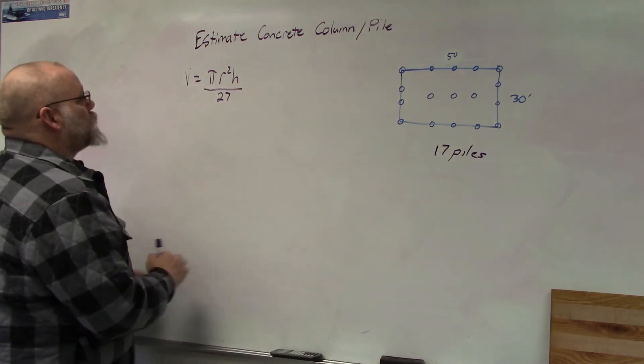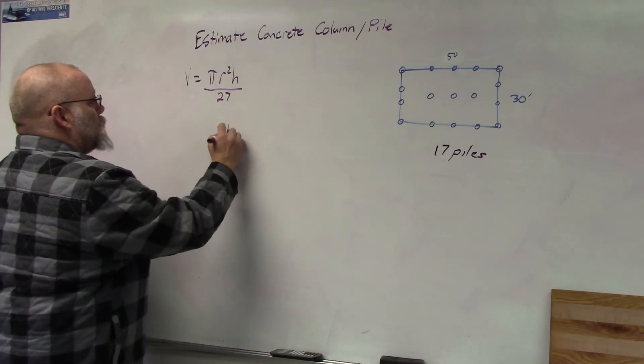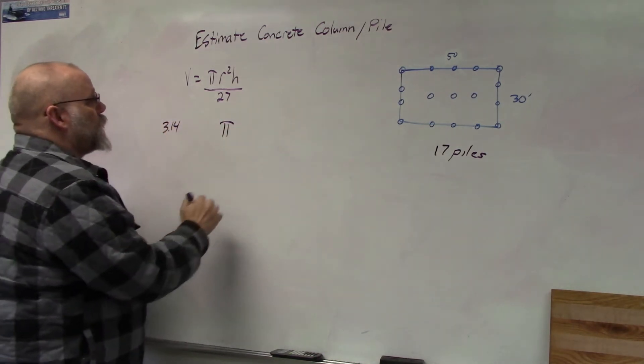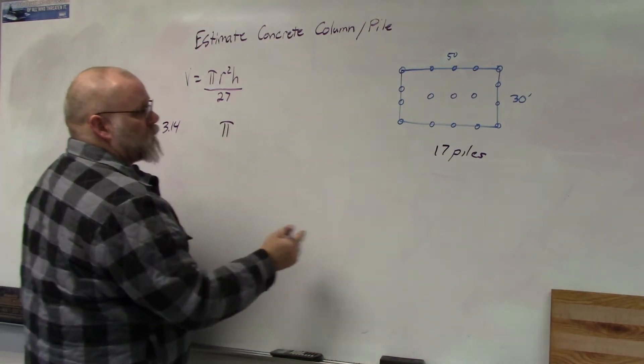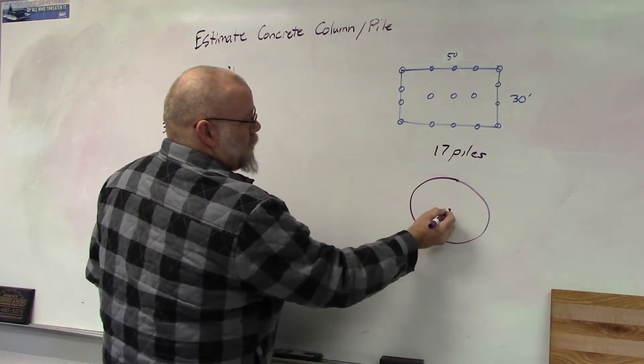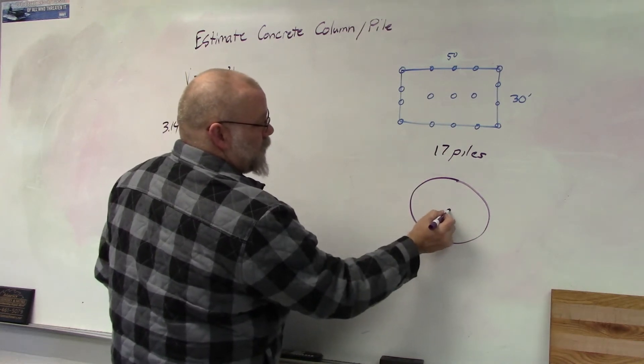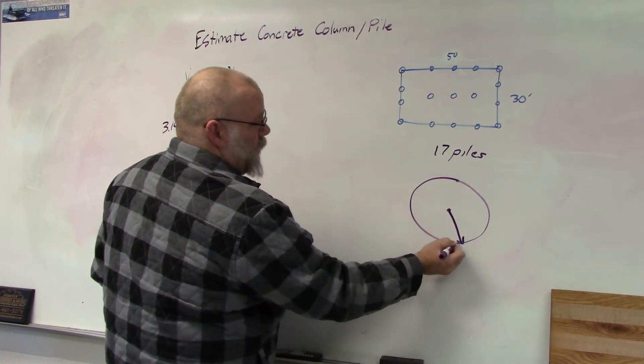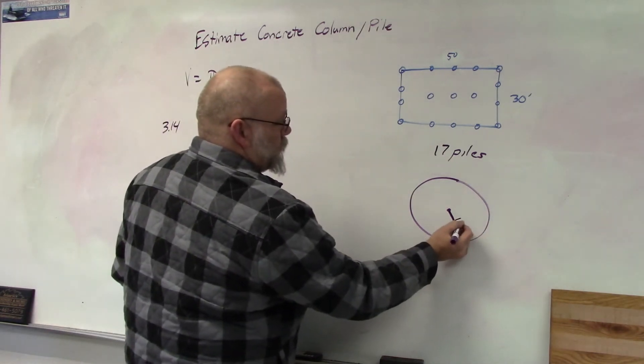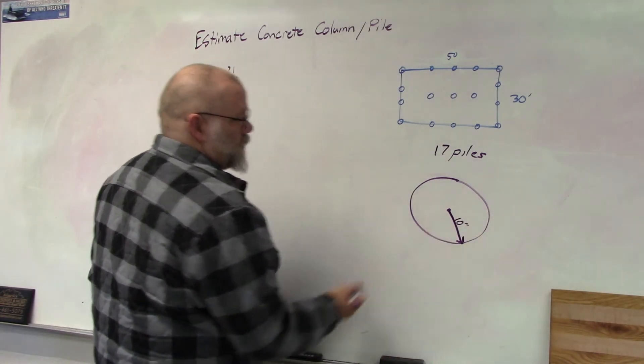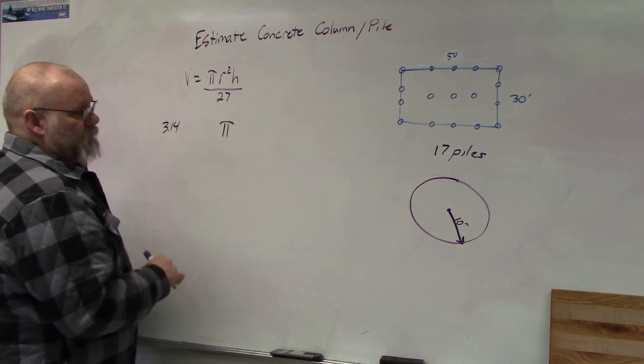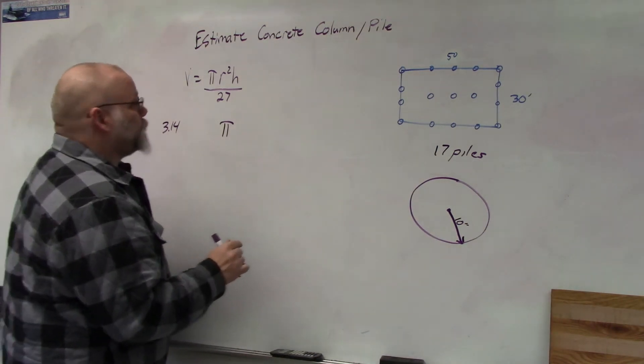So pi is a given, most of you know it as 3.14. The radius is the distance from the center, the exact center of the circle to the edge and we'll say that, let's go with 10 inches, 10 inches is a nice round number.